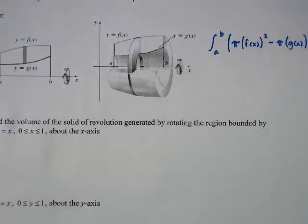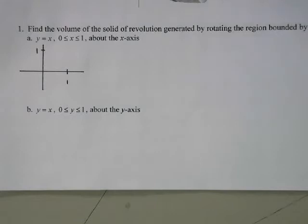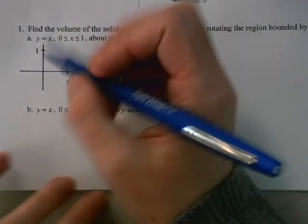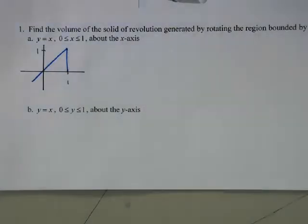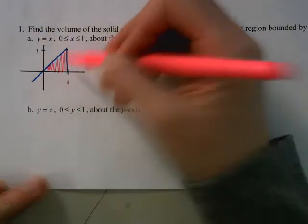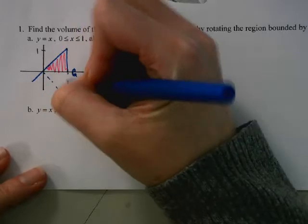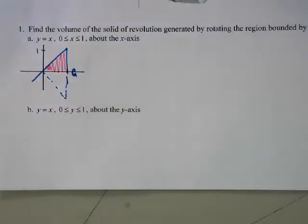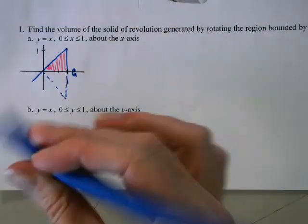As we do more of these, we'll probably start by pulling pi out of the integral. So we're going to find the volume of a solid of revolution generated by revolving y = x, where 0 < x < 1, around the x-axis. We start by drawing a picture: we have the line y = x from zero to one. When we rotate that region around the x-axis, we end up with a cone.